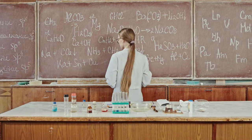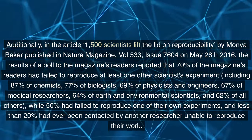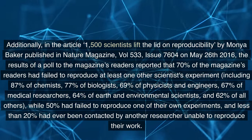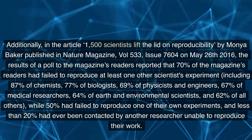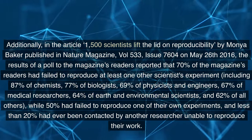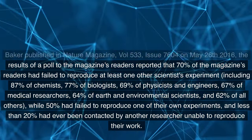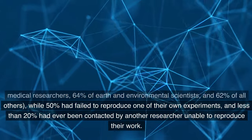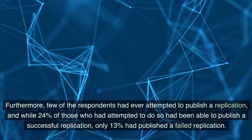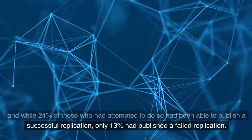Additionally, in the article '1,500 Scientists Lift the Lid on Reproducibility' by Monja Baker, published in Nature Magazine, Vol. 533, Issue 7604 on May 26, 2016, the results of a poll reported that 70% of the magazine's readers had failed to reproduce at least one other scientist's experiment — including 87% of chemists, 77% of biologists, 69% of physicists and engineers, 67% of medical researchers, 64% of earth and environmental scientists, and 62% of all others. Meanwhile, 50% had failed to reproduce one of their own experiments, and less than 20% had ever been contacted by another researcher unable to reproduce their work. Few respondents had ever attempted to publish a replication; while 24% who had attempted had published a successful replication, only 13% had published a failed replication.